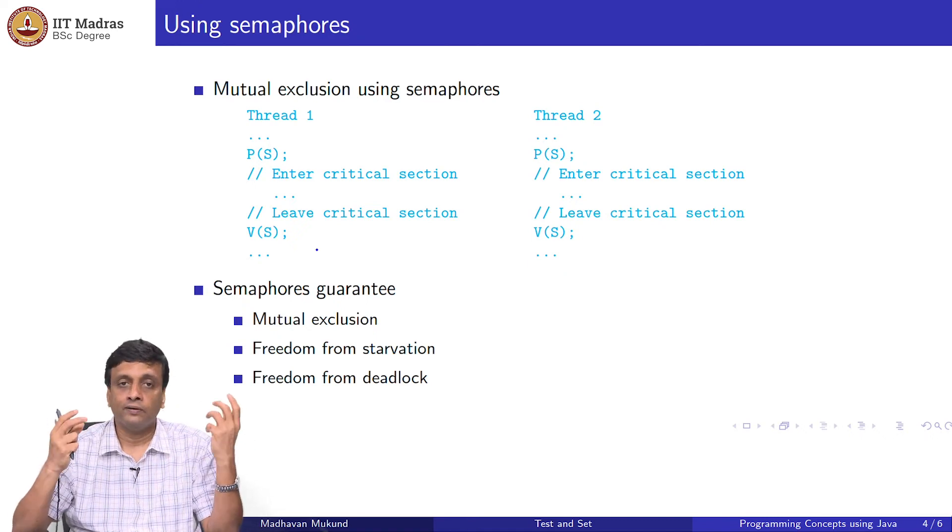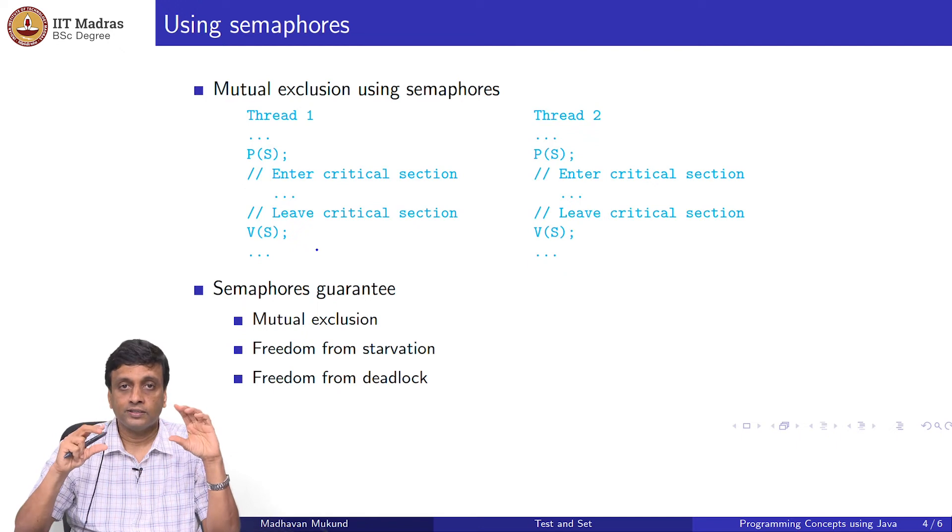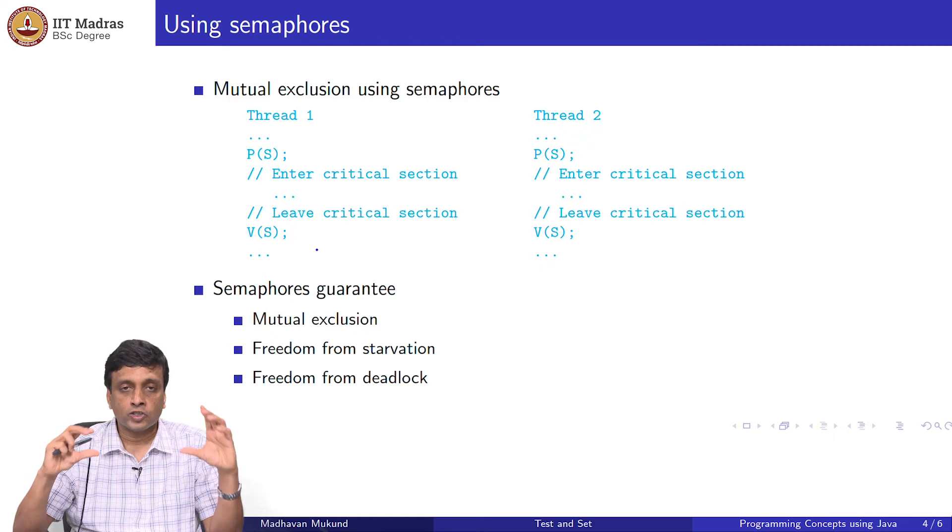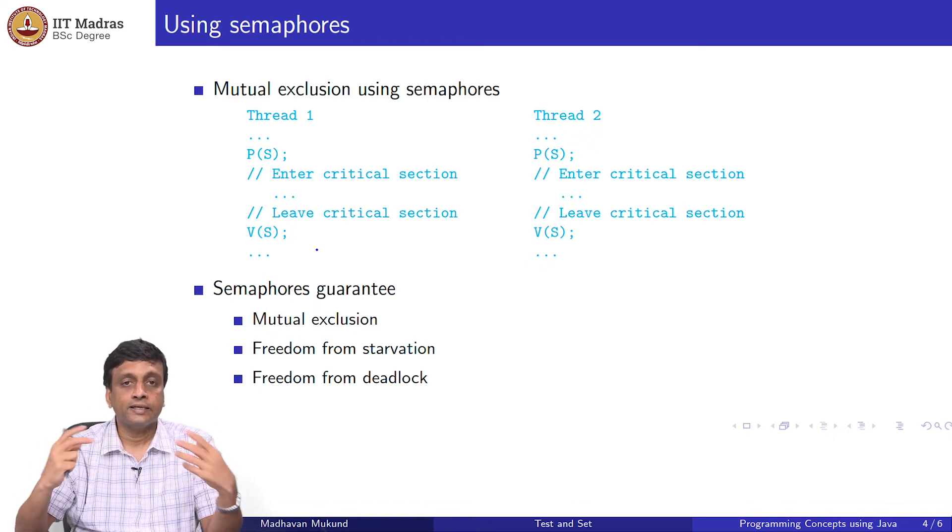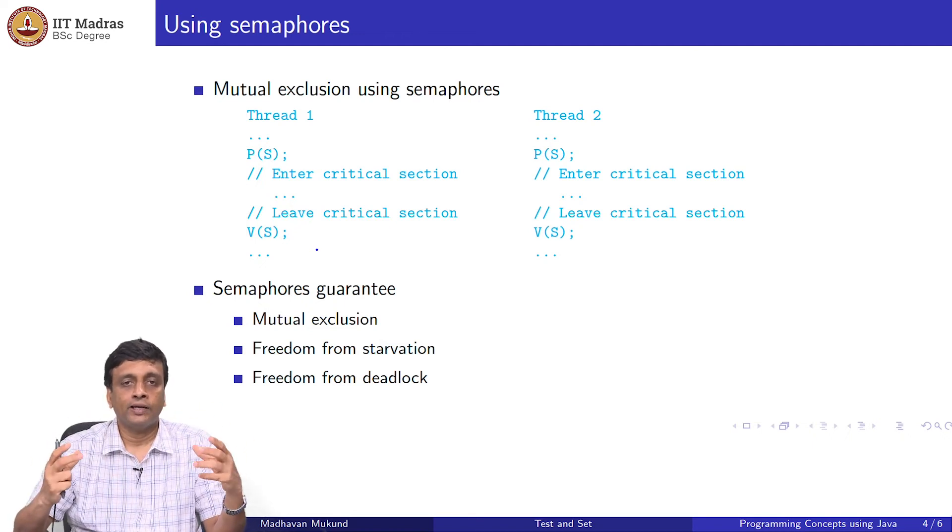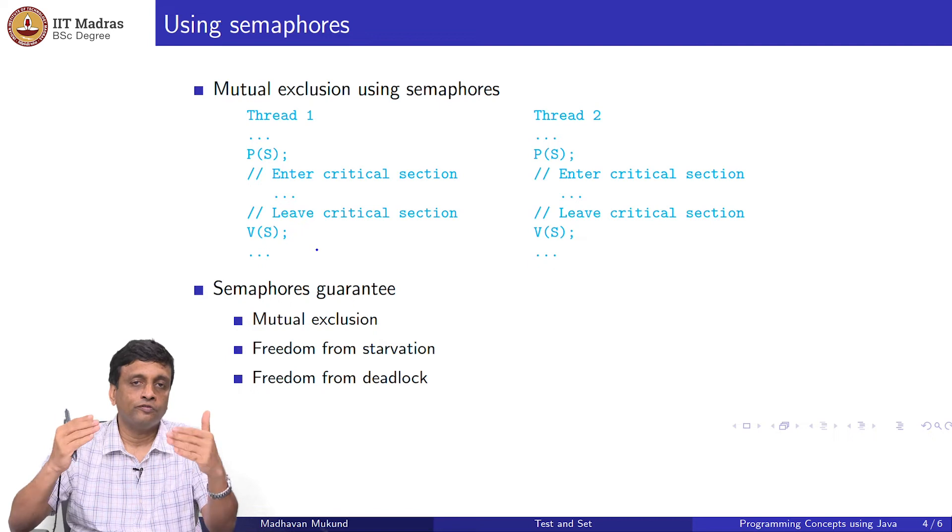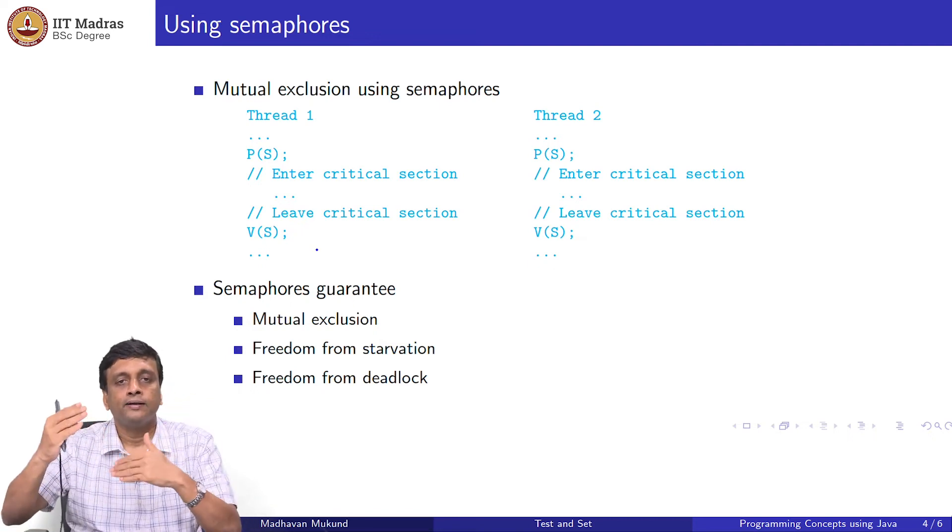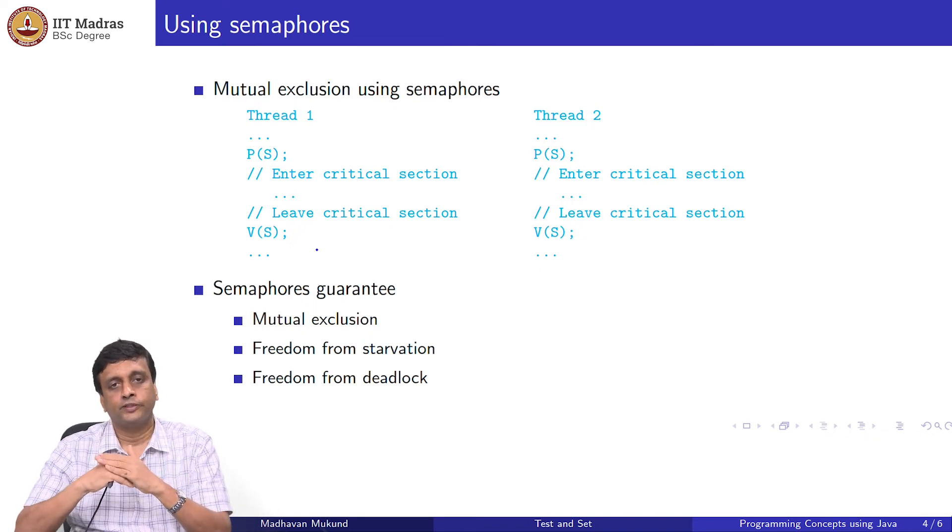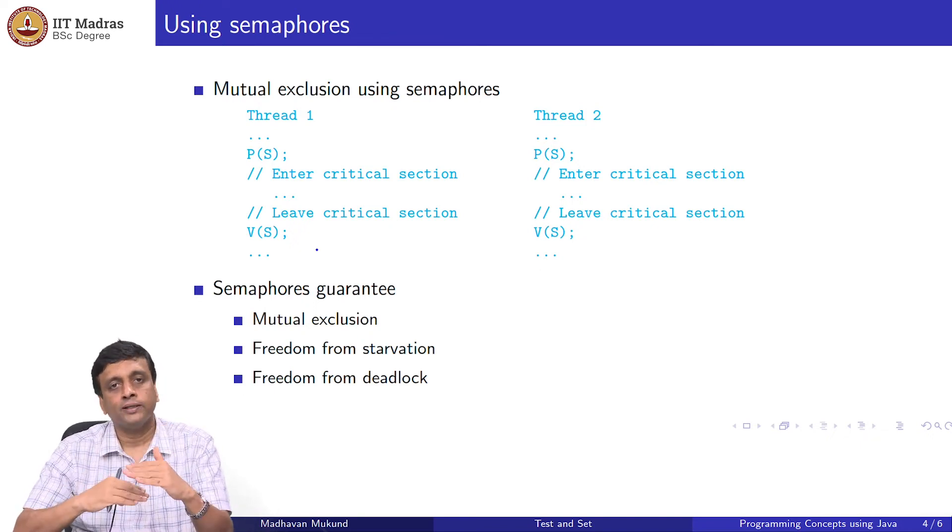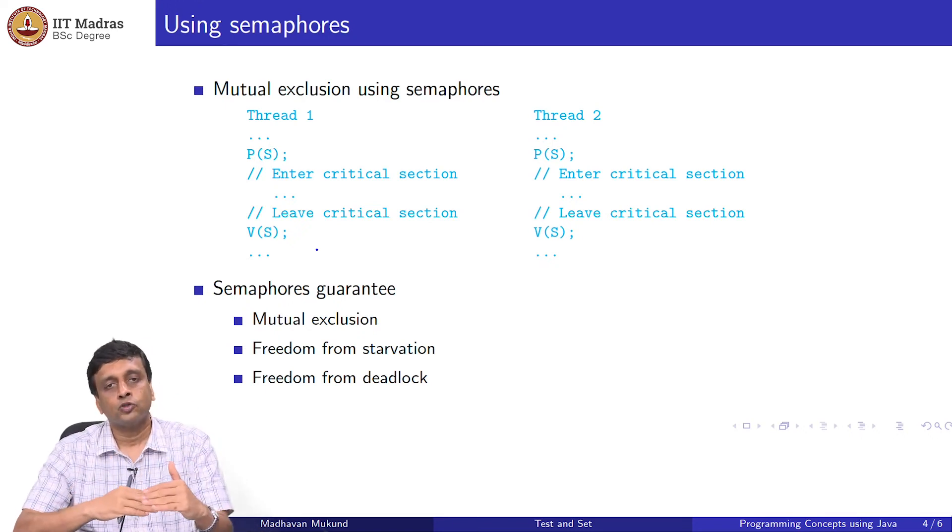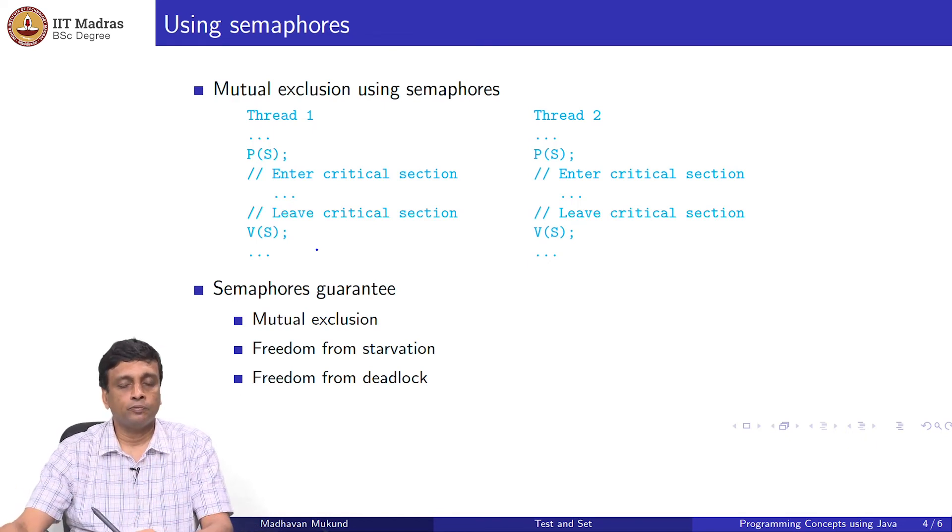We cannot program P and V ourselves. It is important to note that it is not possible. This is a theoretical result which you can prove that it is not possible to generate an atomic test and set unless it is given to you. Because whatever you do in a program, any kind of computing environment, this is a two step process. You have to fetch the value from somewhere, look at it and put it back. You cannot collapse it into one value unless the hardware provides it to you or the software provides it to you. We have to assume that this is available to us, then we can use it to build these critical sections and this mutual exclusive access in a much more simple way for people to use.